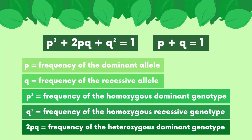Here's a recap of the equations and what each variable means: p and q represent the frequency of the dominant and recessive allele respectively. p² and q² represent the frequency of the homozygous dominant and recessive genotypes respectively. And lastly, 2pq represents the frequency of the heterozygous dominant genotype. Those are all the basics you need to know about the mathematical model of Hardy-Weinberg Equilibrium.